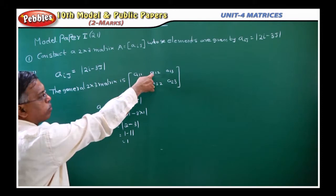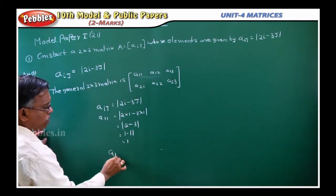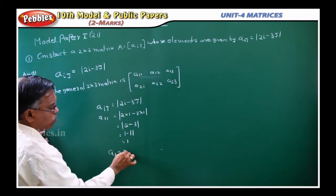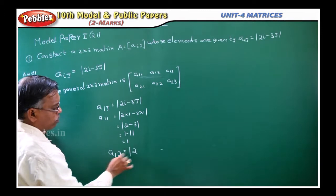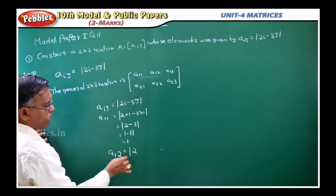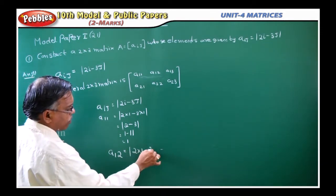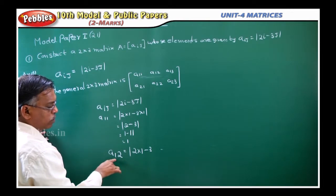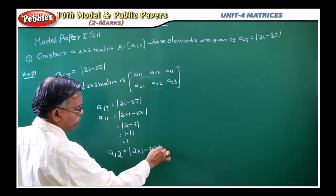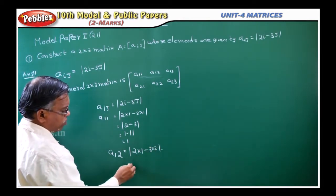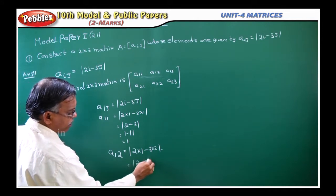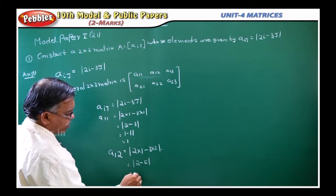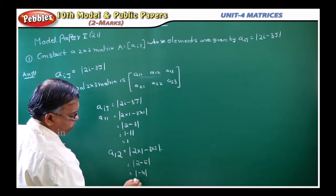The next element is A₁₂. A₁₂: i value is 1, j value is 2. So modulus of 2 into 1 minus 3 into 2, which is 2 minus 6, nothing but modulus of minus 4, nothing but 4. So A₁₂ equals 4.